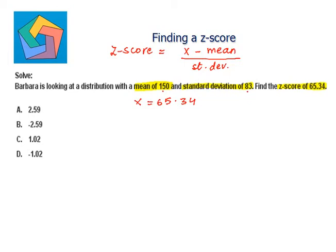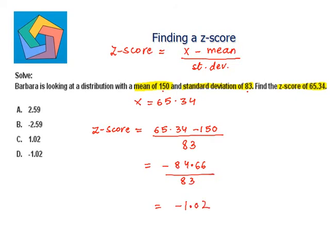Let's put it in the formula. Z-score equals 65.34 minus 150 divided by 83, which is equal to 65.34 minus 150 equals negative 84.66 divided by 83, which is equal to negative 1.02, which is the answer in the D part.